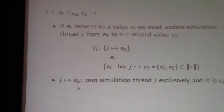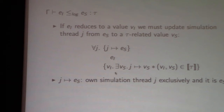We introduce a ghost resource: j maps to es, meaning we own the simulation thread j exclusively and it's currently equal to es. We can express the simulation as a Hoare triple: in the precondition we say simulation thread j is currently es, and if we reduce ei to a value vi, then we have to show there exists a value vs such that we can update j to vs — which implicitly means we have to show a reduction of thread j from es to vs — and these values have to be related at the given type.